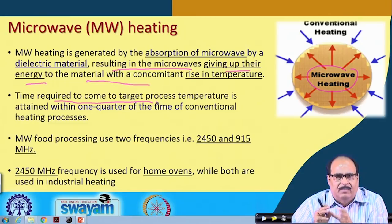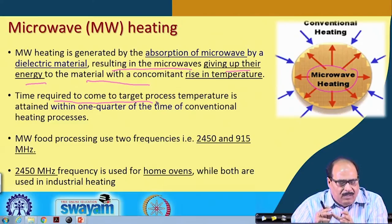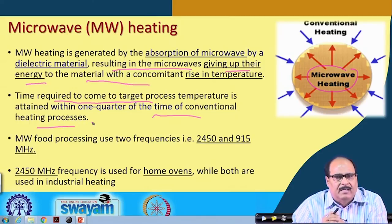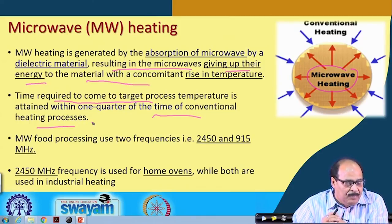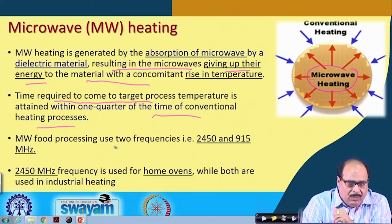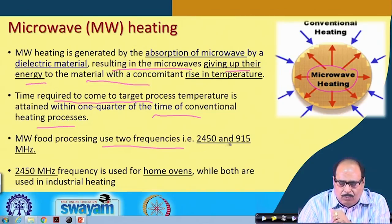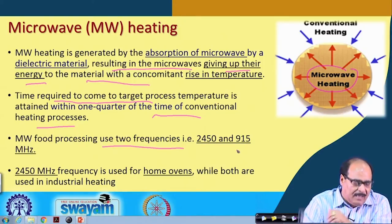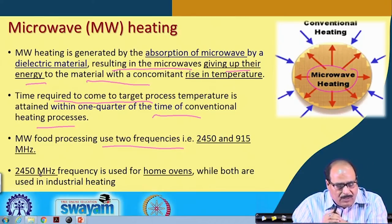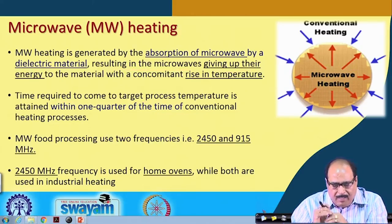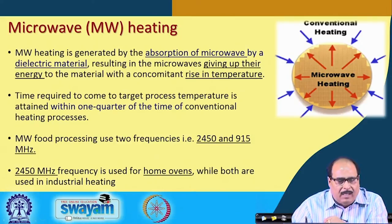Some researchers conclude that microwave heating takes about one quarter of the time required for conventional heating processes. Microwave food processing uses two frequencies: 2450 and 915 megahertz. Normally 2450 megahertz is used for home ovens, whereas for industrial ovens both 2450 and 915 megahertz are used.